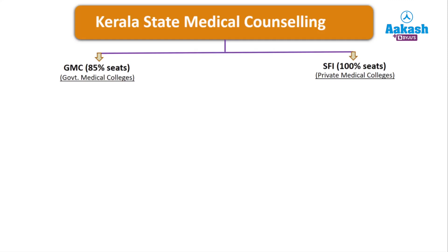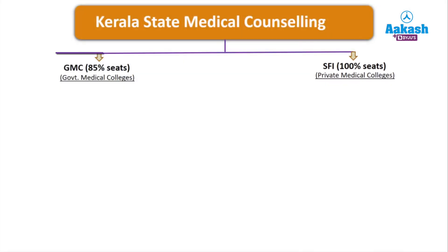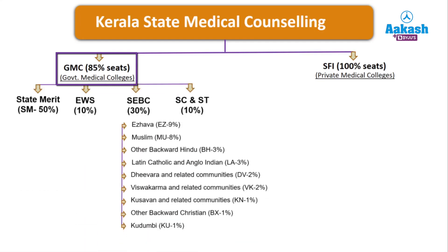The Kerala state medical counseling chart includes two important segments: government medical colleges and self-finance institutions. In government medical colleges, 85% of seats are considered — meaning 15% have already been counted for the All India Quota and would be considered in All India counseling. Among these 85% seats, treated as 100%, 50% goes to state merit.